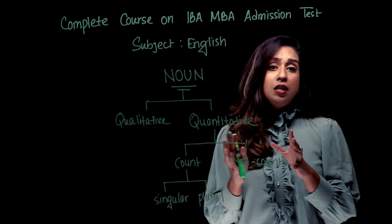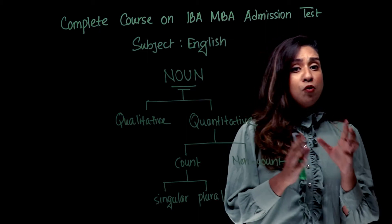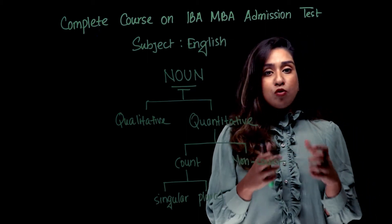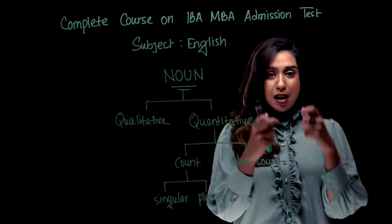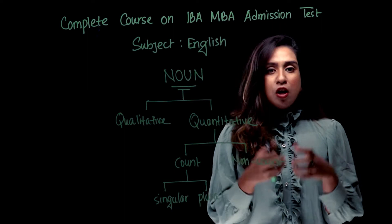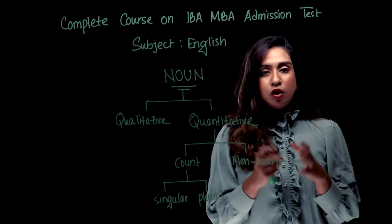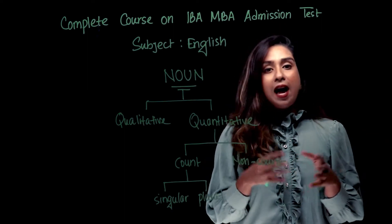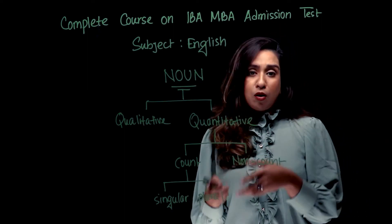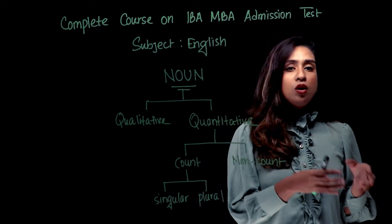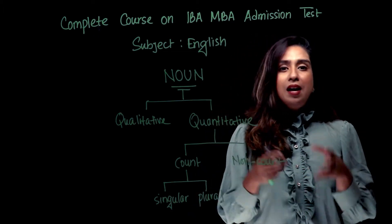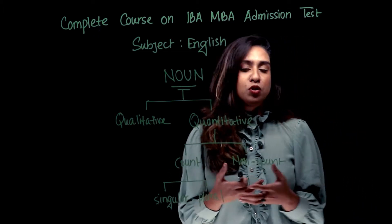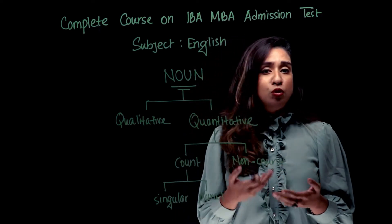We focus on quantitatively — what kind of noun we look at. When we talk about quantitatively, we talk about two ways: one is count noun and non-count noun. Count noun means that we can count.